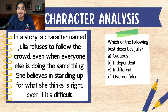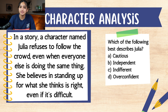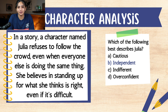Character analysis. In a story, a character named Julia refuses to follow the crowd, even when everyone else is doing the same thing. She believes in standing up for what she thinks is right, even if it's difficult. Which of the following best describes Julia? A. Cautious. B. Independent. C. Indifferent. D. Overconfident. Take a minute to pause the video to see which answer you think is correct. If you said B, Independent, you're correct.